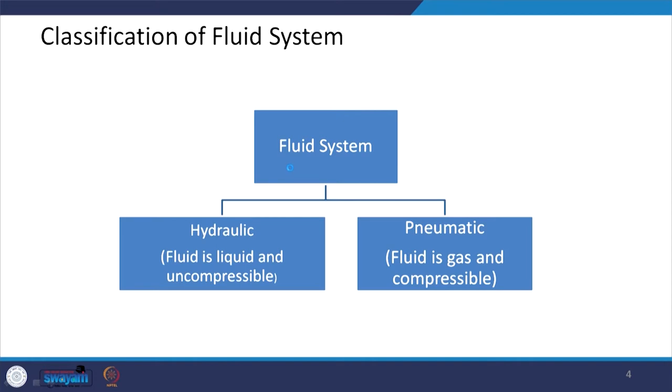Regarding the classification of fluid systems, fluid systems can be classified into two types: hydraulic and pneumatic. In case of hydraulic, the fluid is liquid and it is incompressible, whereas in case of pneumatic, the fluid is gas and it is compressible. In a mechatronic system, a subsystem may consist of either a hydraulic or pneumatic part, so it is important to know how to model both.